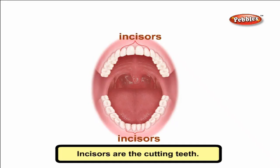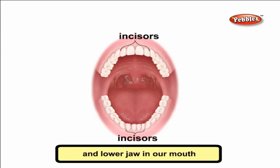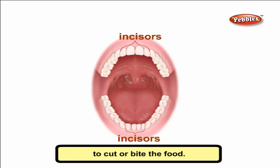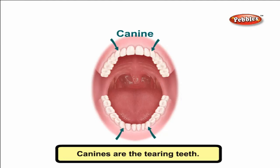Incisors are the cutting teeth. The front four teeth in the upper and lower jaw in our mouth are the incisors. They are flat and have a sharp edge to cut or bite the food.